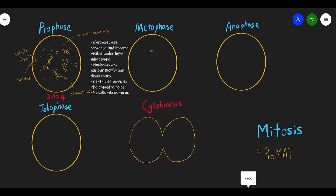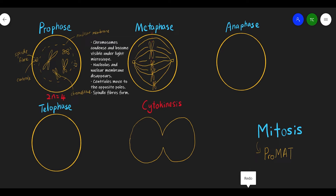Moving on to metaphase. The chromosomes are drawn in the middle of the cell. The arrangement doesn't matter — they are arranged randomly, so the long or short chromosome can be on top; as long as they are drawn in the middle, that's correct. We draw the centriole and then the spindle fiber, which is linked to the centromere — draw the spindle fiber from the centriole all the way to the centromere.